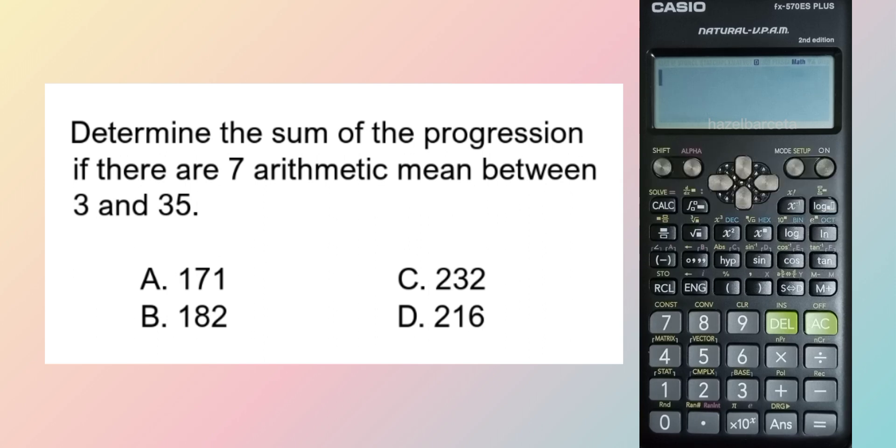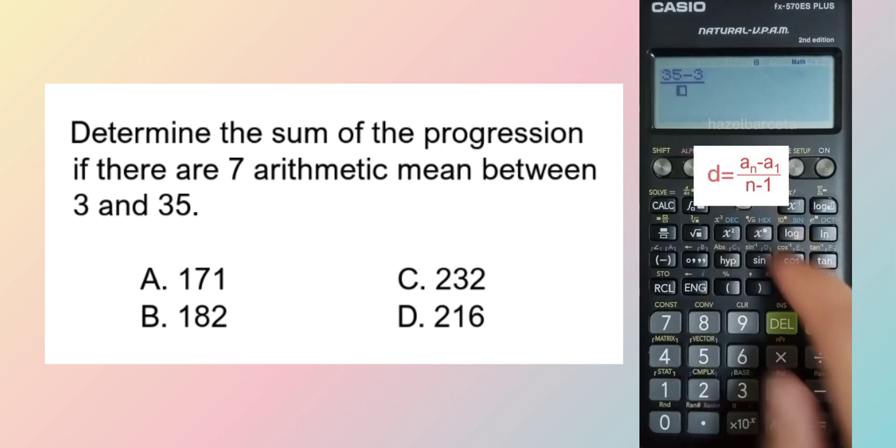So we are dealing with arithmetic progression and we are to solve for the common difference, which is equal to last term 35 minus first term 3 over n.